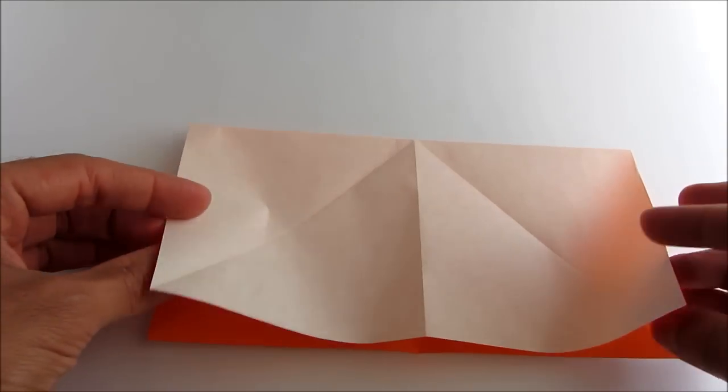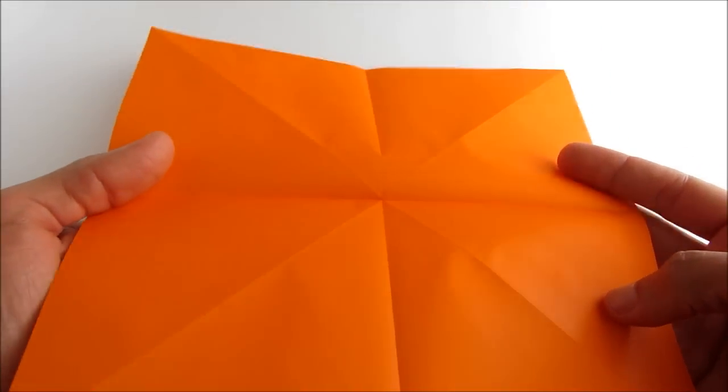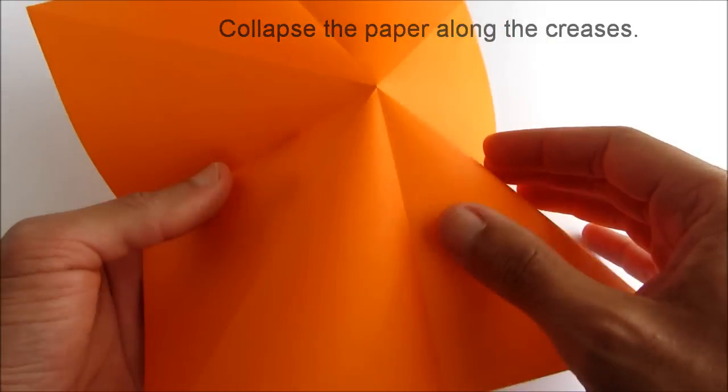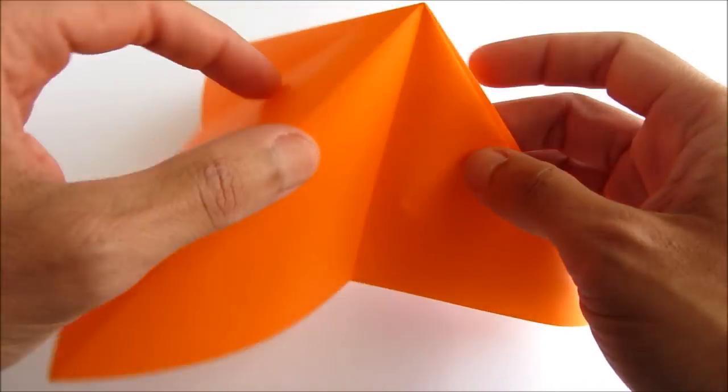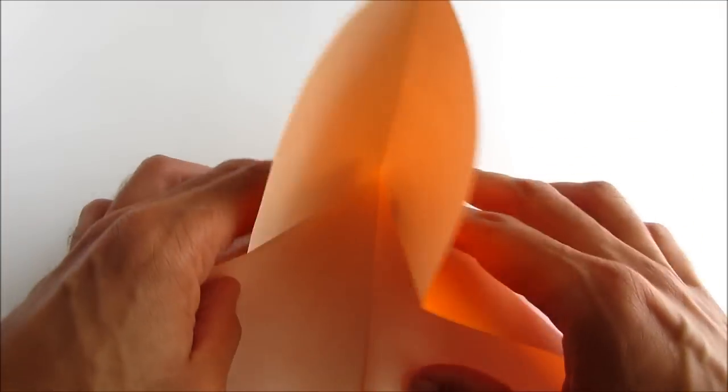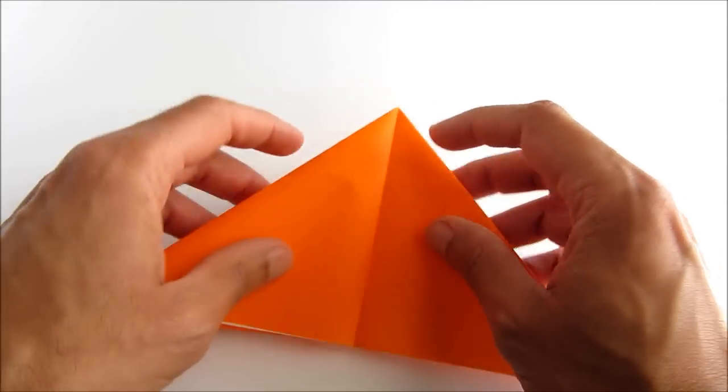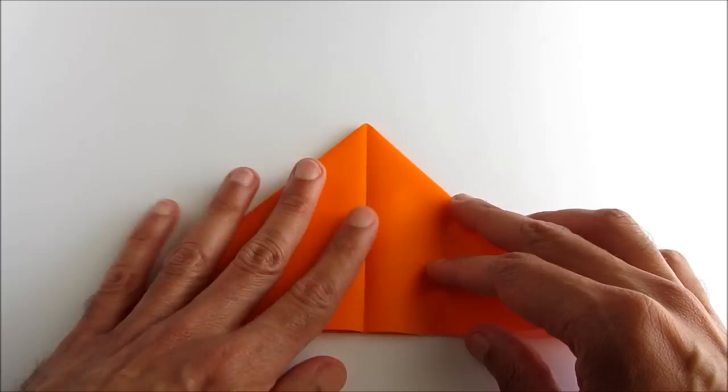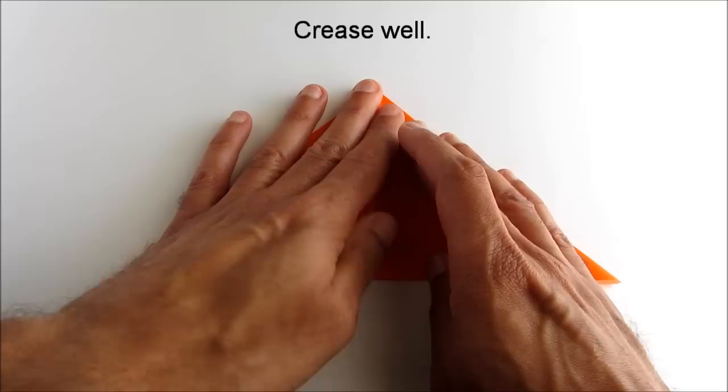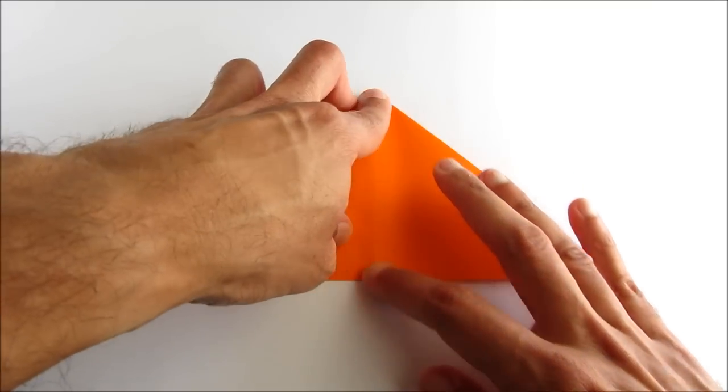Unfold again. Now collapse the paper so that it folds in along the creases you've made. Crease the piece, and you'll end up with a base known as the water balloon base.